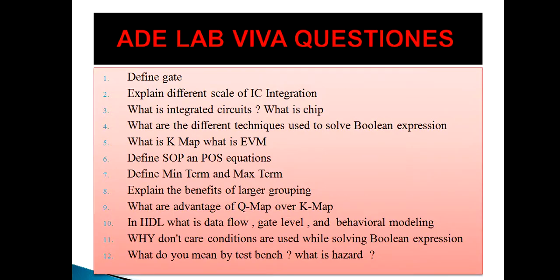What is a chip? A chip is an integrated circuit, a piece of semiconductor material with many miniature circuits integrated on it. The other name for the chip is also integrated circuit.